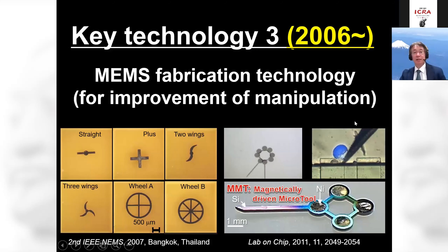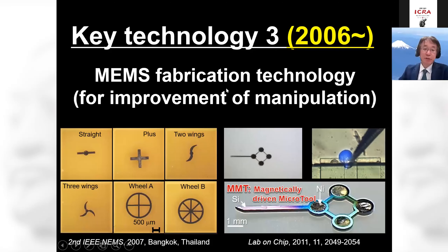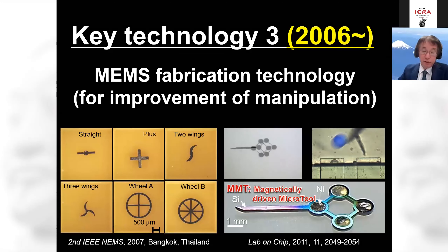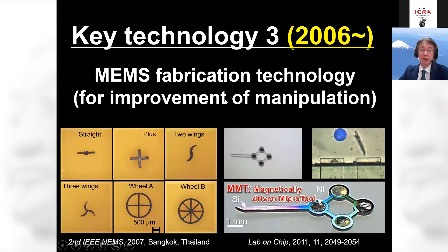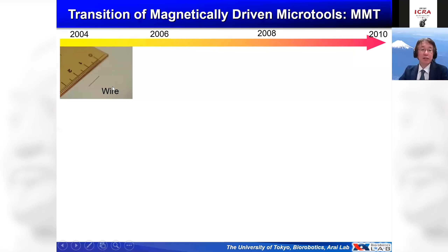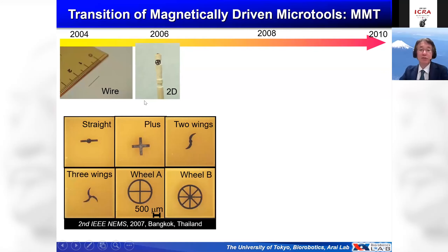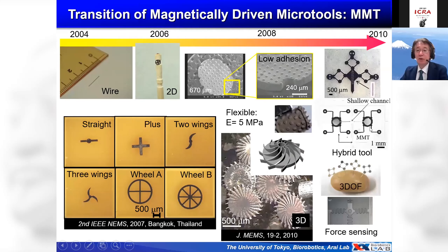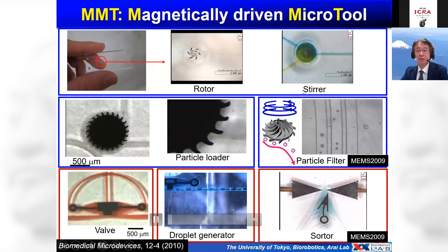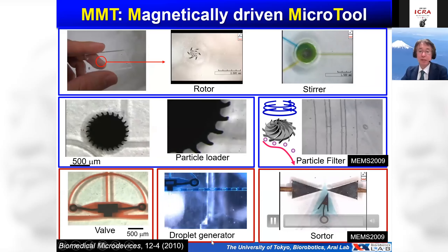Key technology three: to manipulate a very small object, the configuration and structure of the micro tool is quite important. We applied MEMS fabrication technology to improve the manipulability of the object. Starting from the simple wire 20 years ago, by using MEMS technology we can change the shape, size — scalable design is possible — and change the surface condition, 3D surface, and composite material combining soft and rigid materials. There are many applications: rotation, steering, particle loading and filtering, sorting, droplet generation, and cell manipulation.